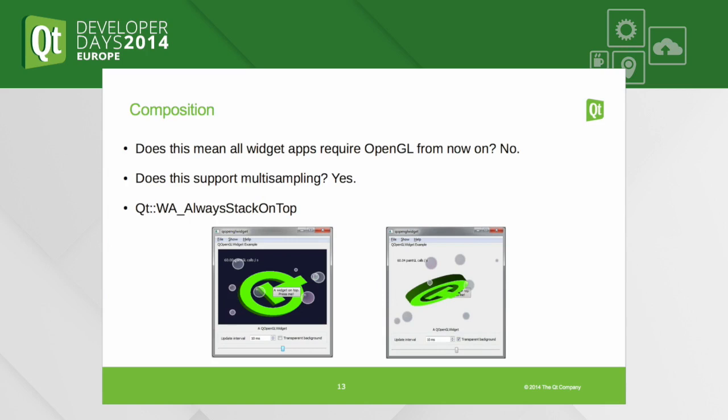A bit more into the details. When Qt 5.3 came out, there were some questions or misconceptions regarding traditional widget applications. This will not change anything for those. If you are not using any of these widgets, then OpenGL is not a requirement — your widget application will work without OpenGL. There's no change there.